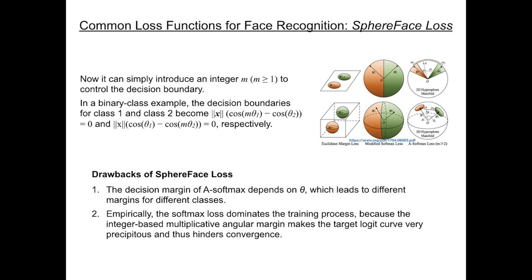A-Softmax approximates the optimal value of m, with its criteria being that the maximal intraclass distance should be smaller than the minimal interclass distance. There are two main drawbacks of A-Softmax.